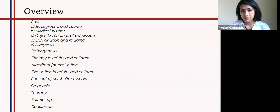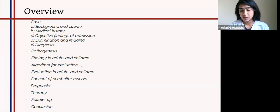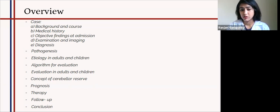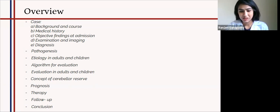To give a brief overview, I'll first start by describing a patient who presented with this syndrome in my hospital. Then I'll touch briefly upon the pathogenesis of the disease, the etiology in adults and children, the algorithm for evaluation when we suspect the syndrome, the concept of cerebral reserve and why it's important to start treatment as soon as possible, the prognosis, the therapy, the follow-up, and finally a few points to conclude. I hope this will be interesting because this occurs not only in the adult, but also the pediatric neurological population, and since we have some pediatric neurologists listening today, I hope it will be of interest to them also.